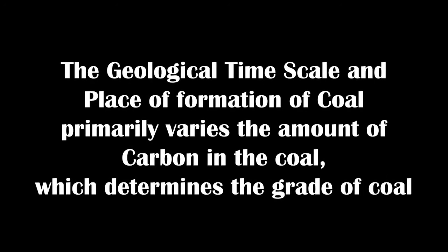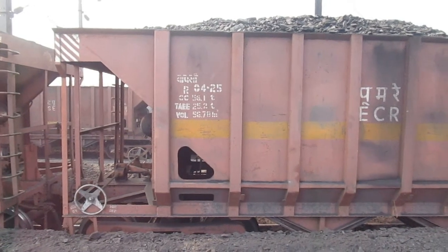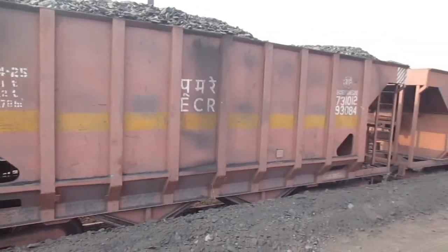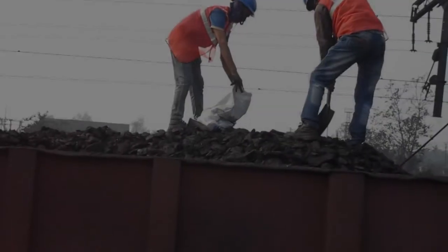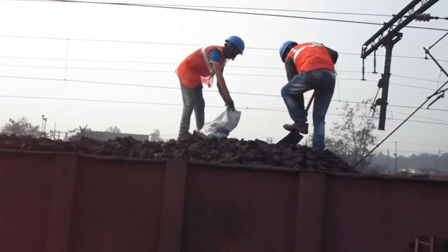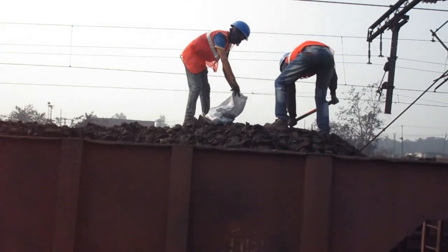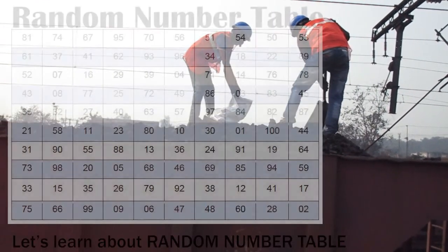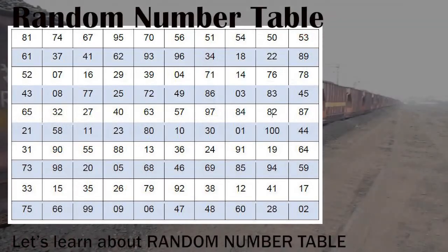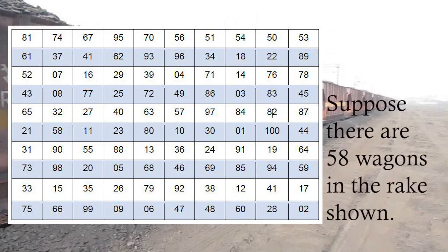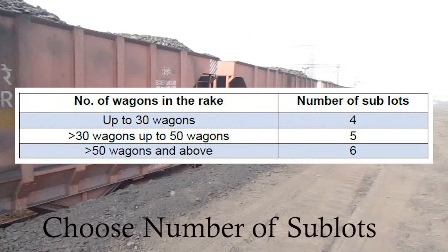Let us study about coal sample collection from railway wagons. Coal samples are collected by dividing the whole rake into sublots. The wagon numbers are selected according to a random number table taken from Clause 2.1 of BIS standards. For example, if this rake contains 58 wagons, according to this table we will have six sublots.